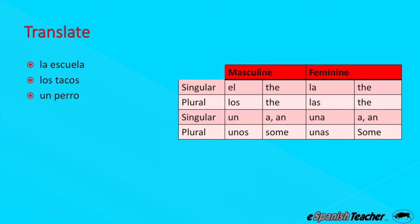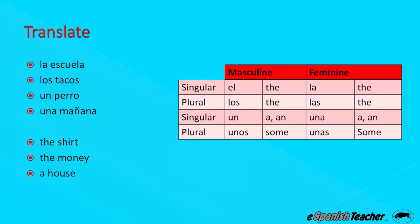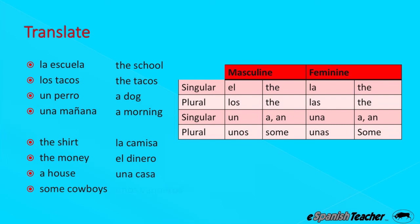Now we're looking at English words and translating them to Spanish. The shirt — la camisa. The money — el dinero. A house — una casa. And some cowboys — unos vaqueros. There are the vocabulary words and their meanings.